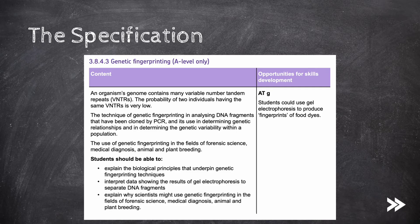First of all, we will cover things known as variable number tandem repeats, also known as VNTRs. We should know how genetic fingerprinting works and its use in determining genetic relationships and in determining the genetic variability within a population. Finally, we should know the use of genetic fingerprinting in the fields of forensic science, medical diagnosis, as well as animal and plant breeding.